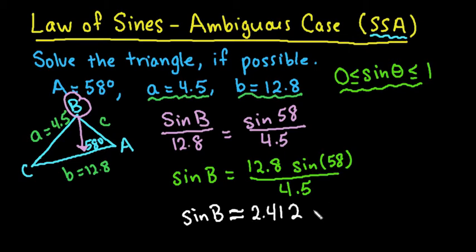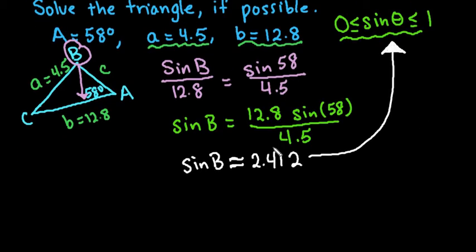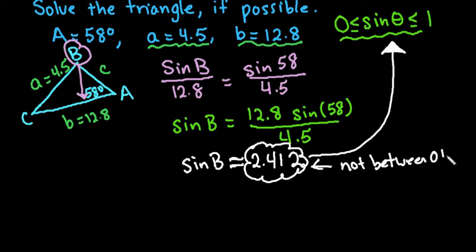So we end up with sine B is approximately 2.412. Well, remember, I just said that in order for it to work, my sine has to be between 0 and 1. So since 2.412 is not between 0 and 1, this will not work. There is no solution.